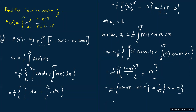Therefore aₙ equals zero. This means the function can be represented as a Fourier series without any cosine terms. The coefficients of all cosine functions in the Fourier series of this discontinuous function are zero.